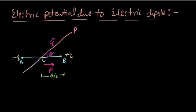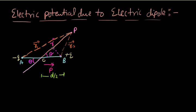Now we extend the line joining the center of dipole to point P. The distance of point P from the minus Q charge is R1, and the distance from the plus Q charge is R2. If angle PCB is theta, then the opposite angle is also theta. We put a perpendicular from point B to the R vector and name this point as N.